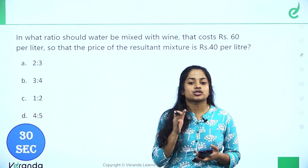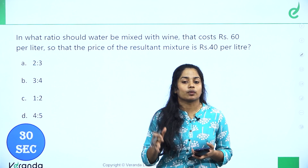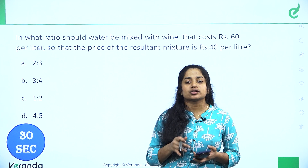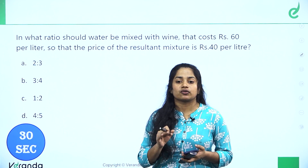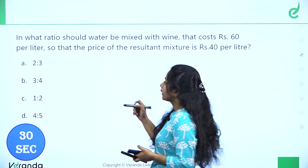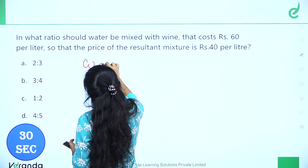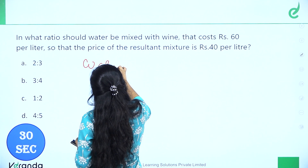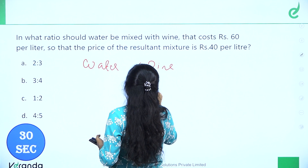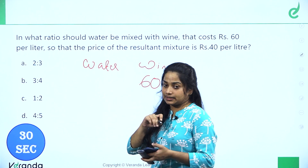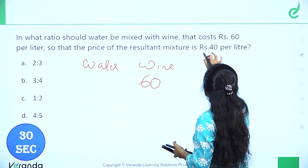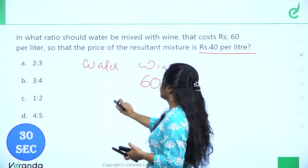In what ratio should water be mixed with wine that costs 60 rupees per liter so that the price of the resultant mixture is 40 rupees per liter? We have water and wine. The price of wine is 60 per liter and the resultant mixture price is 40 per liter.